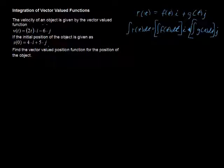We're given that the velocity of an object is given by the vector-valued function v of t equals 2ti minus 6j, and then we're given an initial position of the object, s of 0, when time is 0, the object is located at 4i plus 5j. So 4 units in the i direction, horizontal, and 5 units in the j direction. We're asked to find the vector-valued position function for the position of the object.